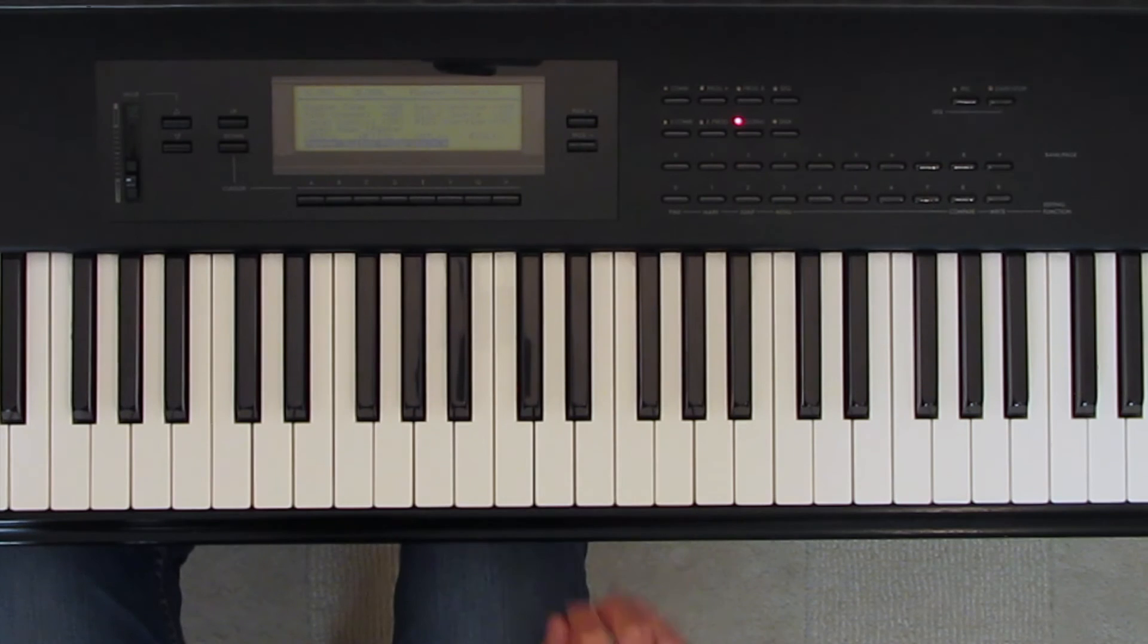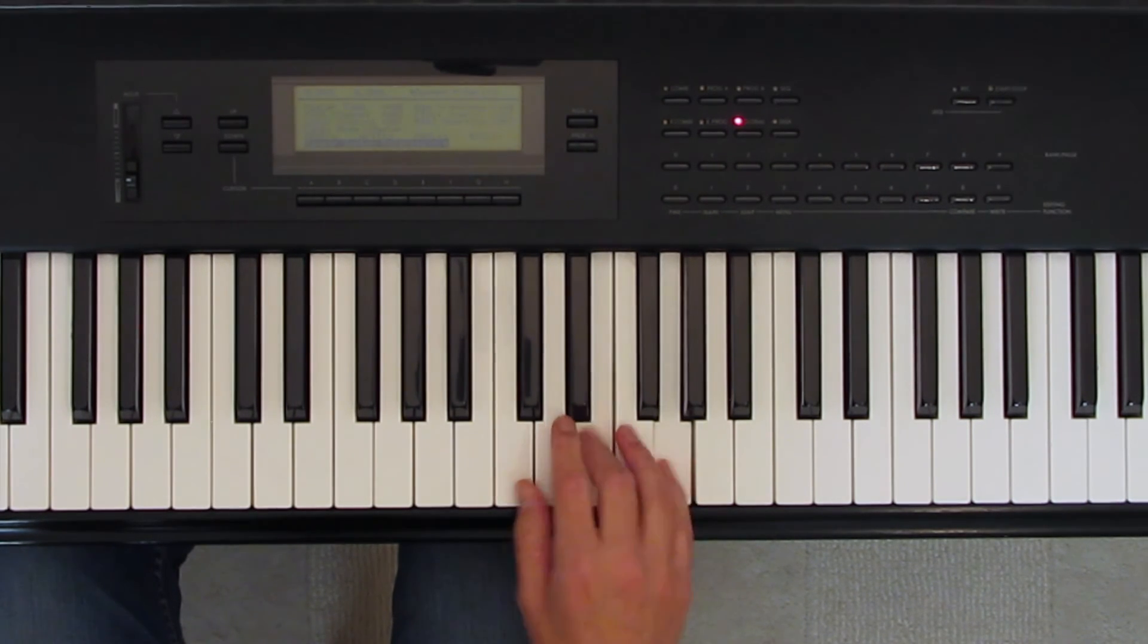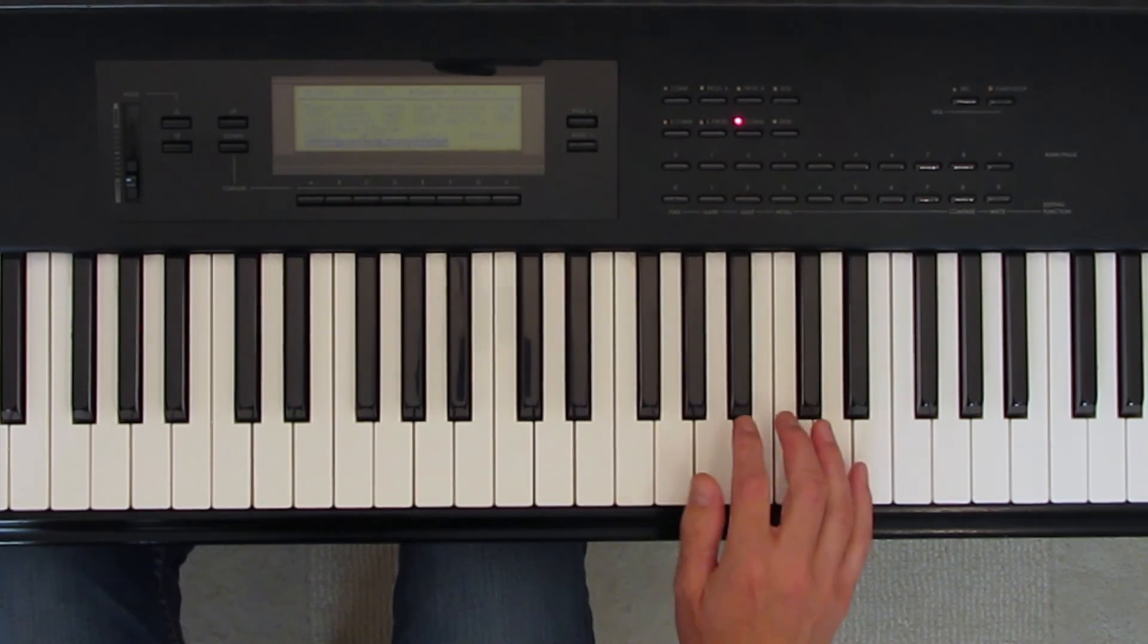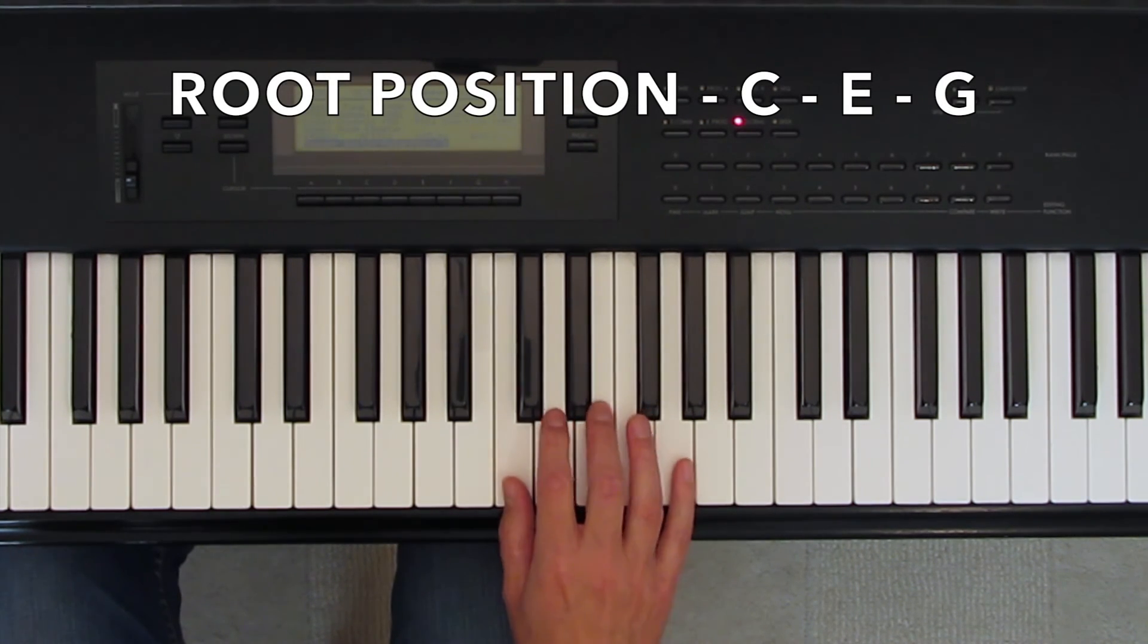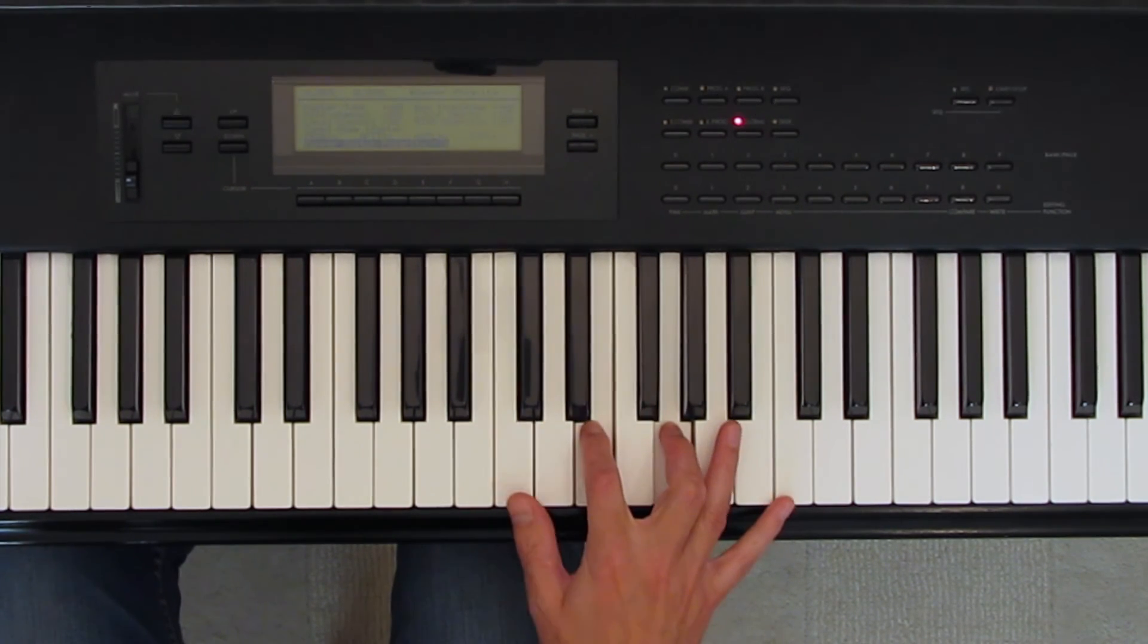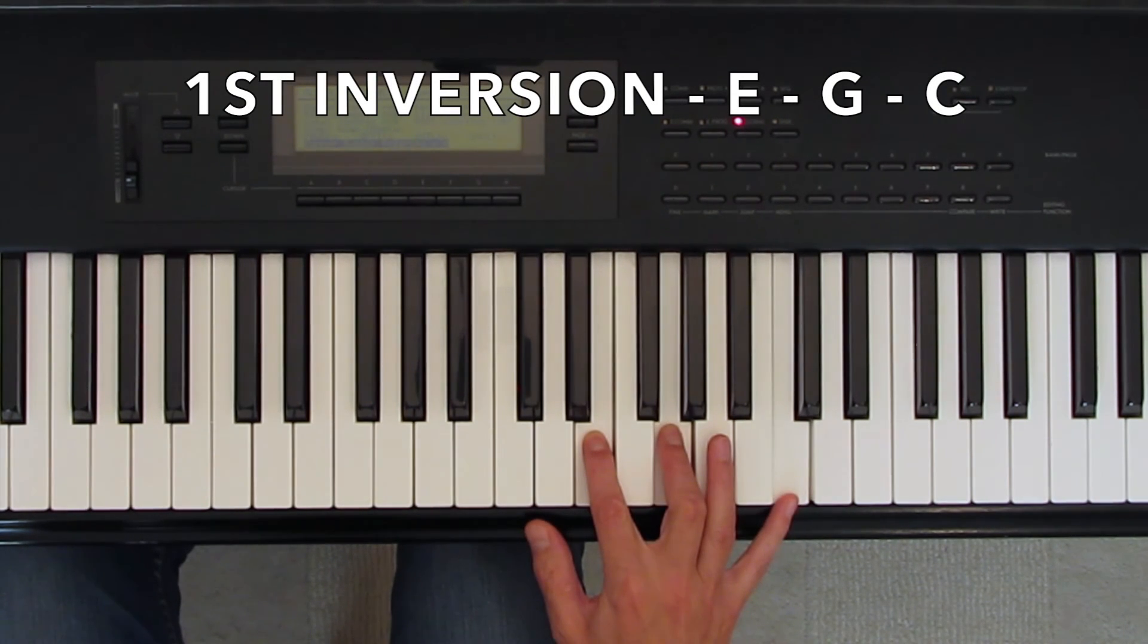Let's now look at these on the piano. One, three, five. Three, five, one. Five, one, three. To make a first inversion, you play the root position triad, move the root up an octave, and there's your first inversion triad.